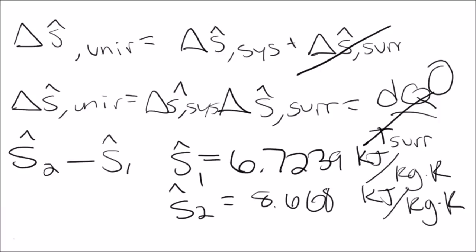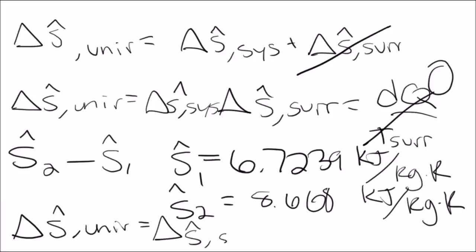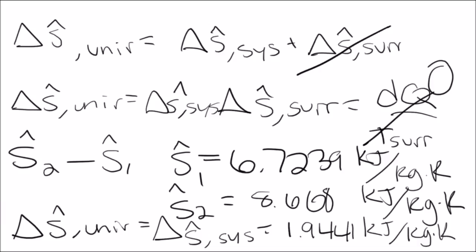Taking the difference between the two entropy values, S_hat_universe equals S_hat_system equals 1.9441 kilojoules per kilogram Kelvin. We have now solved for the change in S of the universe, the change in S of the system, and the change in S of the surroundings, completing the problem.